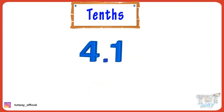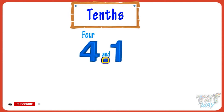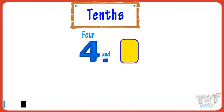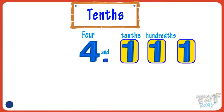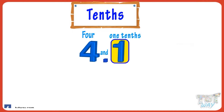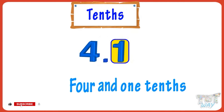Now let's name this number. The number before the decimal is the whole part — it is named as it is. Then the decimal is named as 'and.' If there is one number after the decimal, it is named as tenth. If there is a second number after the decimal, it is named as hundredth. If there is a third number after the decimal, it is named as thousandths. Here we have one digit after the decimal, so it will be named as tenths. So we will name this number as 4 and one tenths.